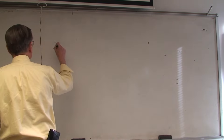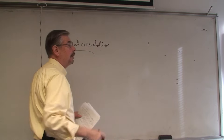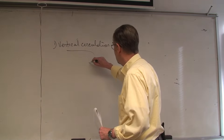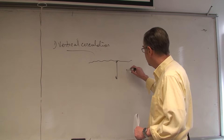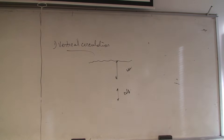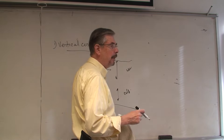Let's talk about the significance of currents. Number one: currents can circulate vertically, not just horizontally. We tend to think of currents as moving masses of water sideways, but water can move up and down. We've talked about vertical circulation before.